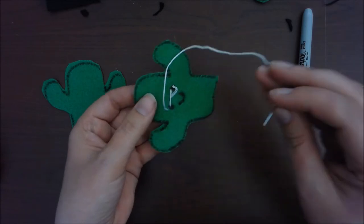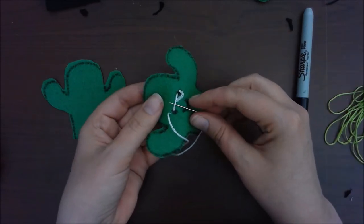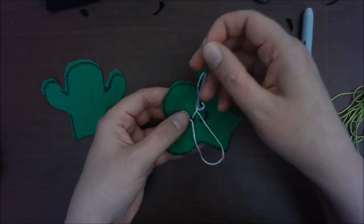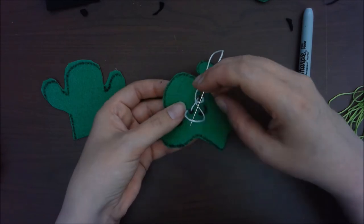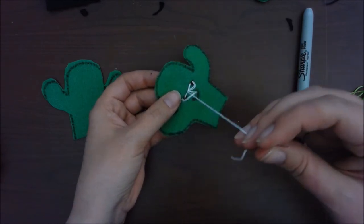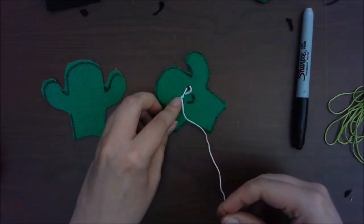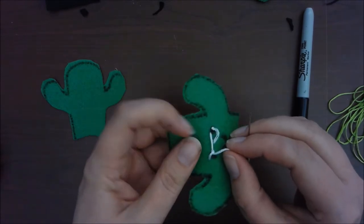Okay, now that both of our eyes are on, we are going to tie off. I'm going to slide my needle underneath one of the stitches. It makes a loop and we're going to pull our thread and needle through that loop. It makes a perfect little knot.